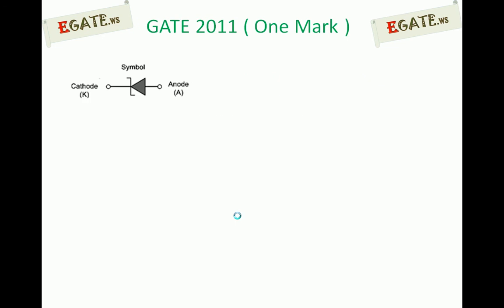This is the symbol of a Zener diode. A Zener diode is also a p-n junction, but it is a heavily doped silicon p-n junction. An ordinary p-n junction can be made of either germanium or silicon, but a Zener diode is always heavily doped silicon — it cannot be built from germanium. Both the p-side and n-side are heavily doped, whereas an ordinary diode is lightly doped.